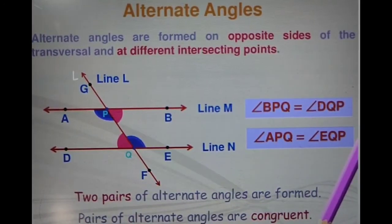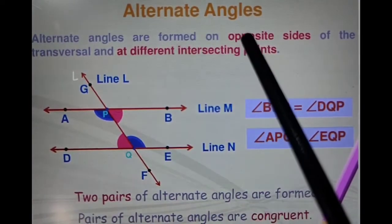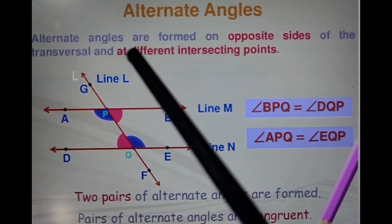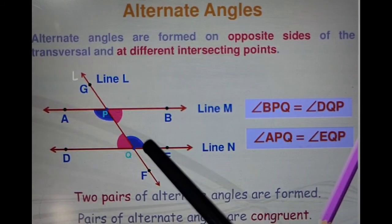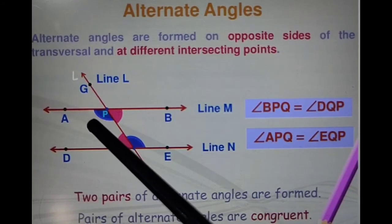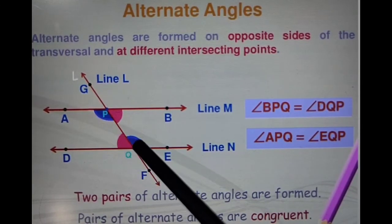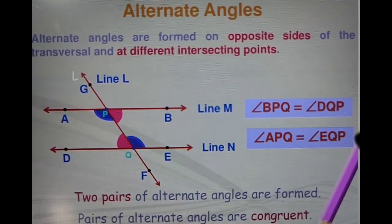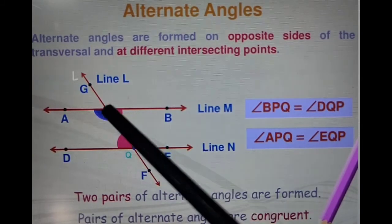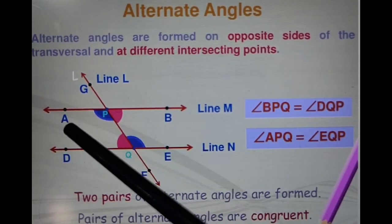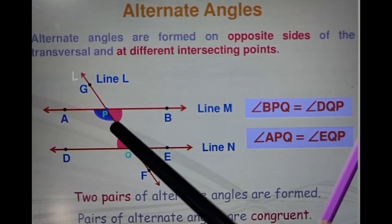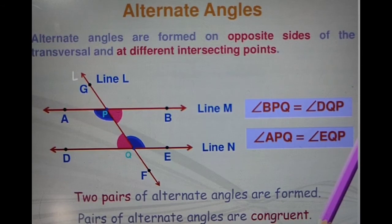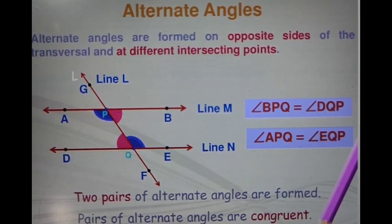Next are the alternate angles. Alternate angles are formed on the opposite sides of the transversal at different intersection points P and Q. The blue angles shown are alternate angles on opposite sides of these two points. Similarly, the pink angles are alternate angles. Two pairs of alternate angles are formed and pairs of alternate angles are congruent — corresponding angles are equal as well as alternate angles are equal.